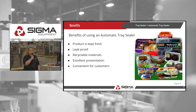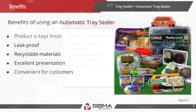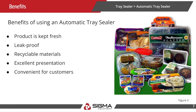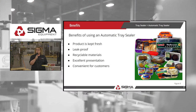The benefits of using an automatic tray sealer: the product is kept fresher, it's leak-proof in most cases, uses recyclable materials and can be recycled afterwards, offers excellent presentation, and is easier for customers to use. Think frozen dinners — those go from the freezer to the microwave with no problems.